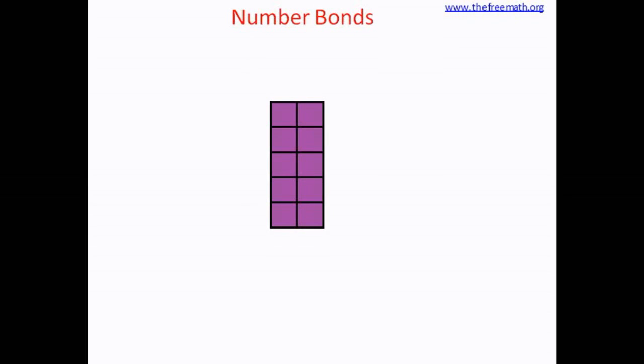Before we see what are number bonds, let's look at this rectangle here. Let's think that there are these small 10 squares. You can actually make these small squares using a cardboard paper and these squares are put together to make a rectangle.